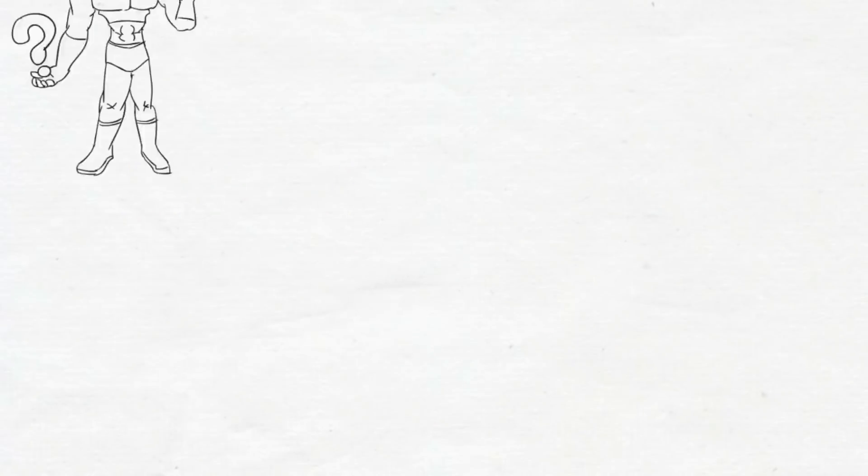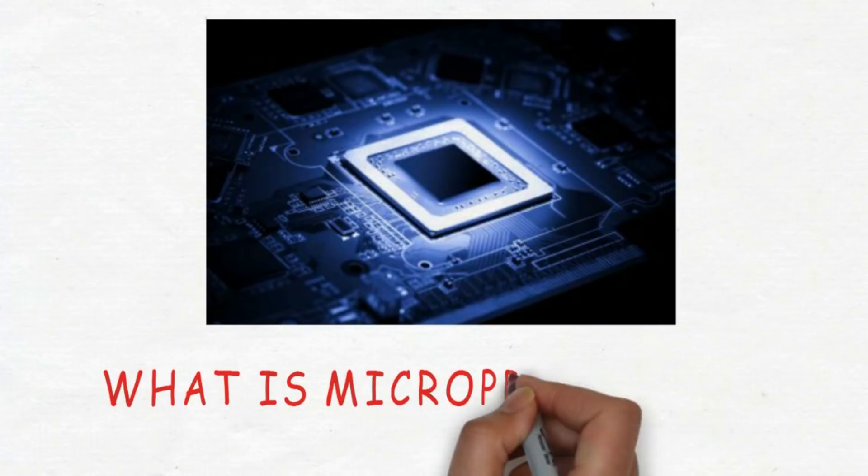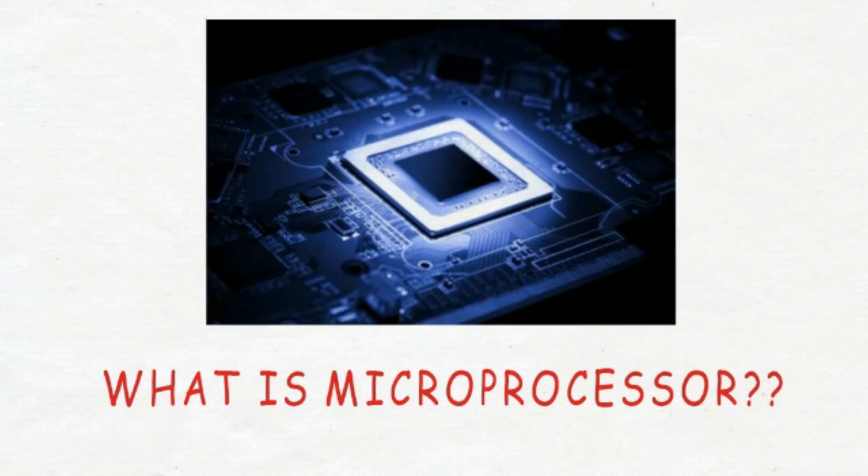The very first question that arises in our mind while talking about microprocessors is: what is a microprocessor? A microprocessor is an integrated circuit which incorporates core functions of a computer's central processing unit. It is a programmable, multipurpose, silicon chip, clock-driven, register-based, which accepts binary data as input and provides output after processing it as per the instructions stored in memory.